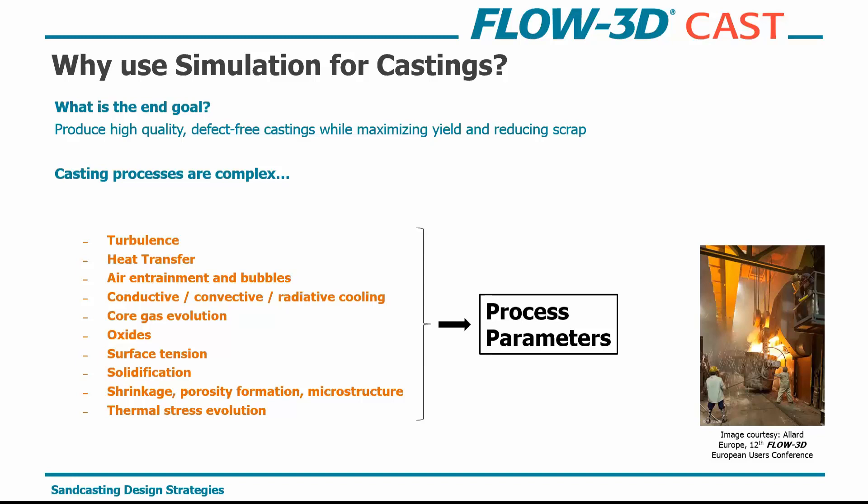Castings are a really complex process to simulate. You have things such as turbulence, heat transfer, air entrainment and trapped bubbles during filling, conductive, convective, and radiative cooling. If you're using cores in your mold, you can have core gas evolution and defects due to off-gassing. You can have oxides in your metal fronts, surface tension effects through thin sections, and solidification-related defects like shrinkage, porosity formation, changes in microstructure, and thermal stress evolution during cooling.